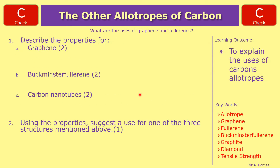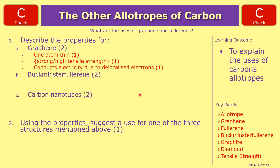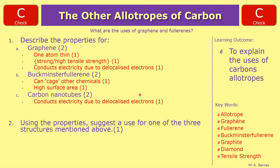Let's have a look at the answers. Question one — describe the properties of graphene, two marks. The first thing you need to say is it's thin, approximately one atom thin, strong or high tensile strength, and you could also say it has delocalized electrons so it conducts electricity. Any two of those three would get you two marks. For Buckminster fullerene there are only two things you can say: it can cage or encompass different chemicals, and it has a high surface area. Bear in mind we're not looking for uses here, just properties. For carbon nanotubes — two marks — it has delocalized electrons so it can conduct electricity, and it is strong or has high tensile strength.